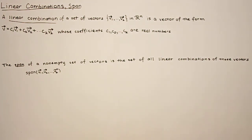Okay, so we're going to look at linear combinations and span. A linear combination of a set of vectors v1 through vk in Rn is a vector of the form v equals c1 v1 plus c2 v2 through ck vk, where coefficients c1 through ck are real numbers or scalars.